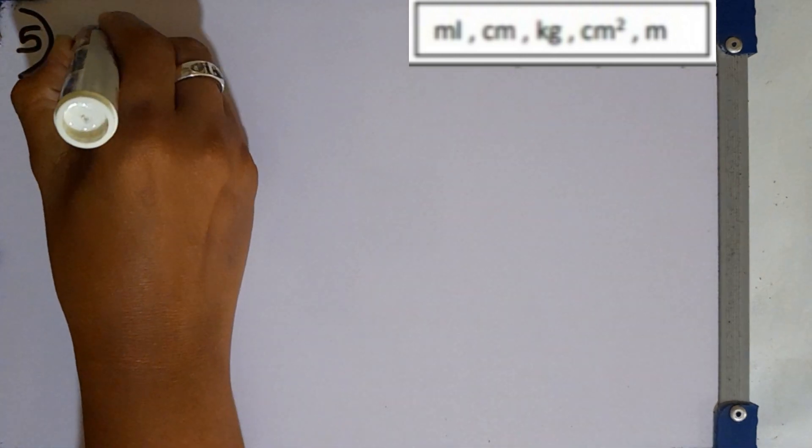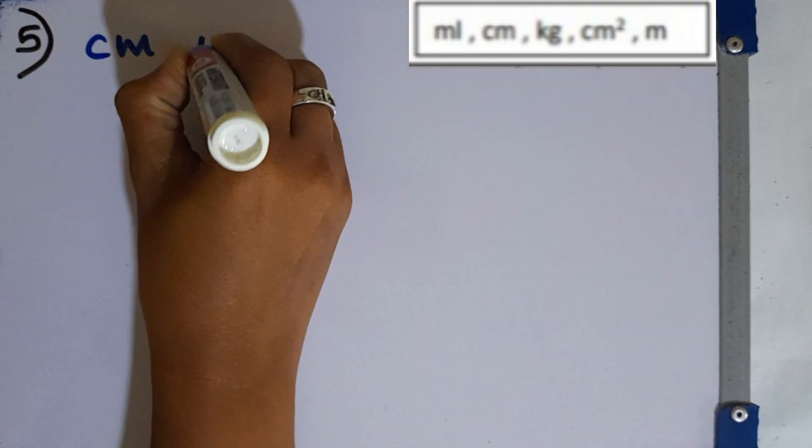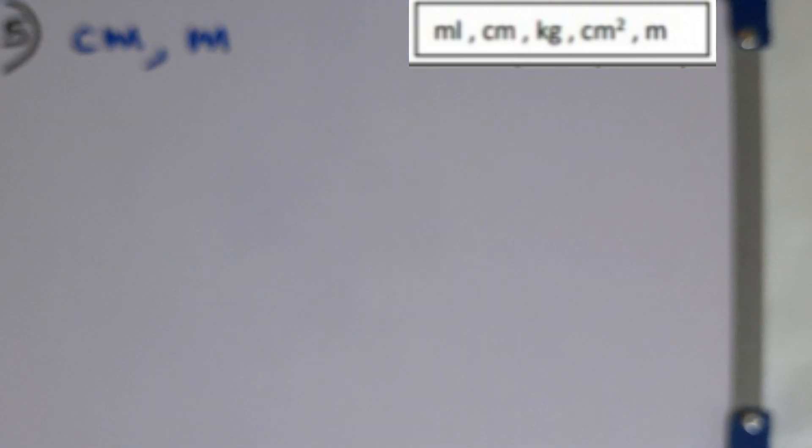Question number 5. Select and write down the units used to measure lengths. Here we are given milliliters, centimeters, kilograms, square centimeter and meter. Out of these centimeter and meter are the units used to measure lengths.